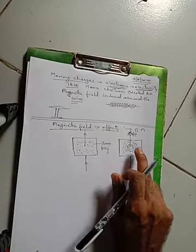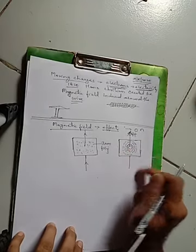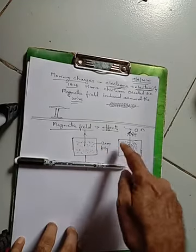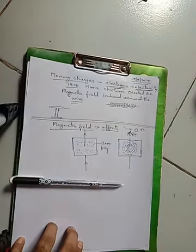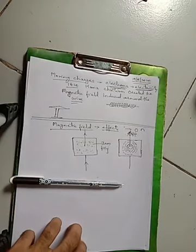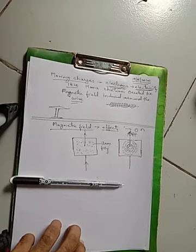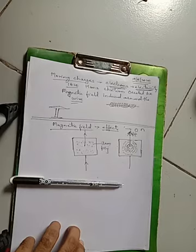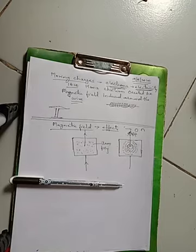These iron filings which have more space in between show that the magnetic field is less effective when moving away from the wire. This experiment was done by Hans Christian Oersted. He explained that whenever current flows through a wire connected to the cardboard and iron filings are placed on it, they arrange in circular rings, showing that the magnetic field is created in a circular ring around the wire.